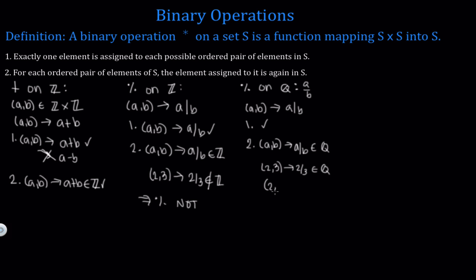But let's look at (2, 0). Zero is a rational number and so is two, so this is definitely a rational ordered pair. But two divided by zero has zero in the denominator, which we cannot have — so this is no longer a rational number. Because of this, division is not a binary operation on the set of rationals.